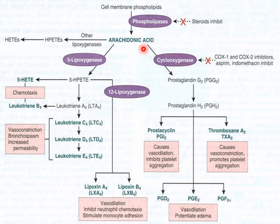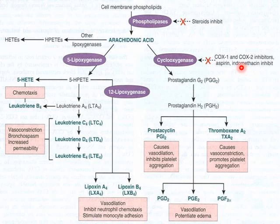On the other side, arachidonic acid goes through the cyclooxygenase (COX) pathway. COX-1 is the constitutive enzyme important for normal homeostasis, whereas COX-2 is the inducible type, more present at sites of inflammation. COX-1 and COX-2 inhibitors — like NSAIDs and aspirin — inhibit the cyclooxygenase pathway.